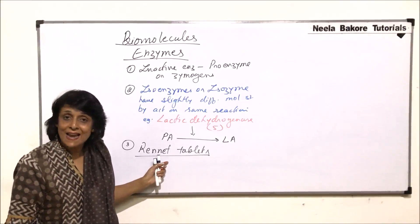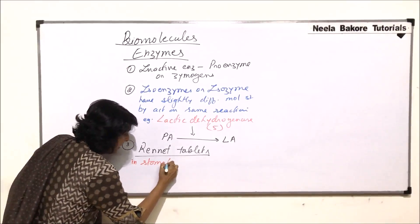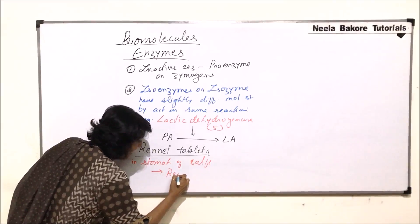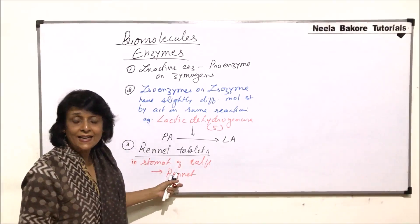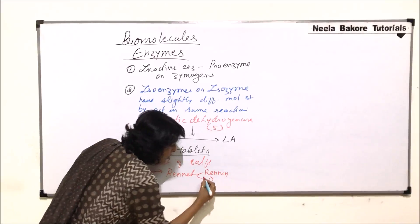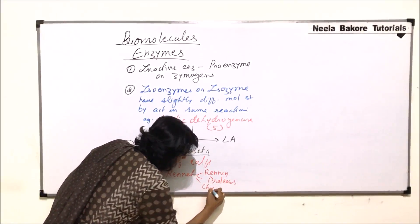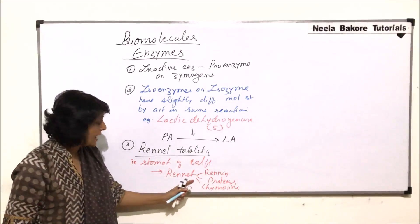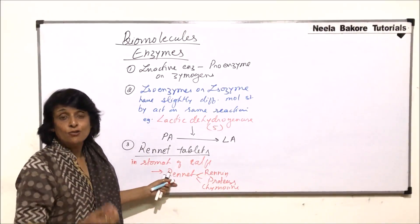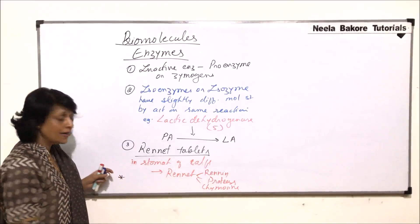In the stomach of calves, a complex secretion is produced known as rennet. This rennet contains many enzymes: it has renin, it also has a protein-digesting enzyme — protease — and it also has chymosin. These different types of enzymes are present together, and that complete secretion is known as rennet.